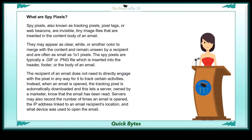What are Spy Pixels? Spy Pixels, also known as tracking pixels, pixel tags, or web beacons, are invisible tiny image files that are inserted in the content body of an email. They may appear as clear, white, or another color to merge with the content and remain unseen by a recipient, and are often as small as one-by-one pixels.